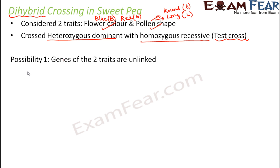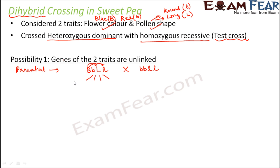If the genes assort independently, the heterozygous dominant parent (BBLL → BbLl) can produce four types of gametes: BL, Bl, bL, and bl. The homozygous recessive parent produces just one gamete: bl.